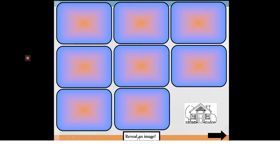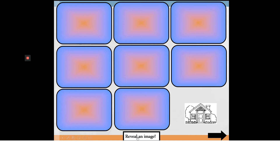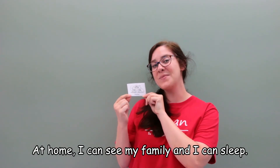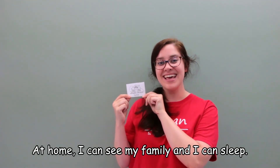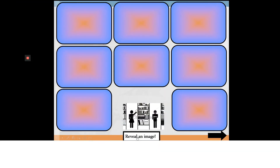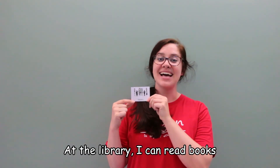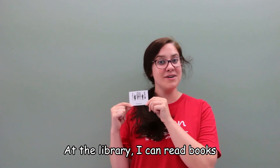Home or house. This is the home. Or this is the house. At home, I can see my family and I can sleep. Library. This is the library. At the library, I can read books.